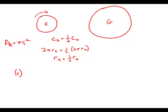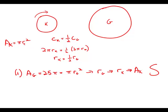Statement number one tells us that the area of G is 25π. The area of G equals 25π equals π times R_G squared. So that would allow us to figure out what R_G is, which would allow us to figure out what R_K is, which would allow us to figure out what the area of K is. So that one statement is, not surprisingly, sufficient.